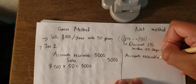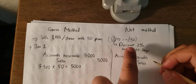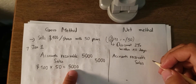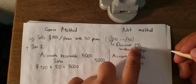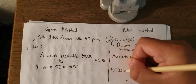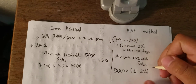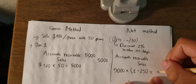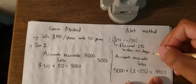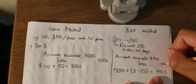For the NET method, we still write accounts receivable and sales, but because the sale discount is 2%, we multiply $5,000 by (1 minus 0.02), which gives a total of $4,900. So accounts receivable is $4,900 and sales is $4,900.